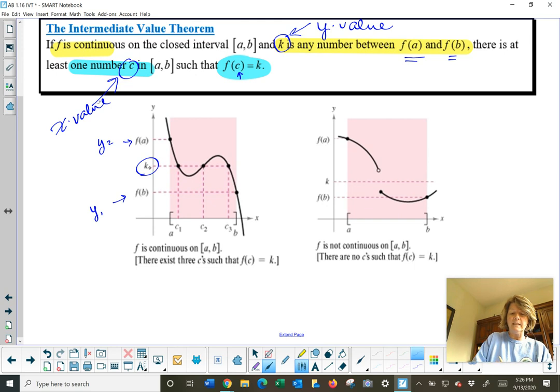If that is the case, and I have a continuous function on [a,b], then that means that I'm guaranteed to find some c value that lies between a and b, where if I input c into my function, I get out that k value. And in this particular function, it looks like we actually have three different c values that would yield that same k.